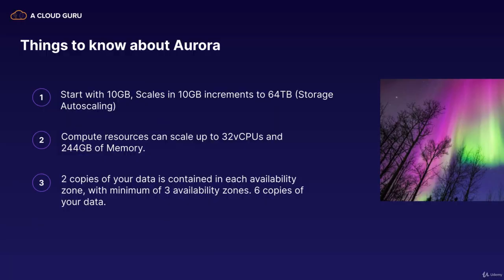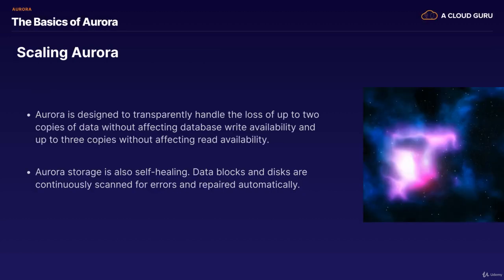So three things to know about Aurora. It starts with 10 gigs and scales in 10 gig increments all the way up to 64 terabytes of storage, and it does this using storage auto-scaling, so it does it automatically. Number two, we have compute resources that can scale up to 32 vCPUs and 244 gigs of memory. And then we've got two copies of your data contained in each availability zone with a minimum of three availability zones, giving you six copies of your data.